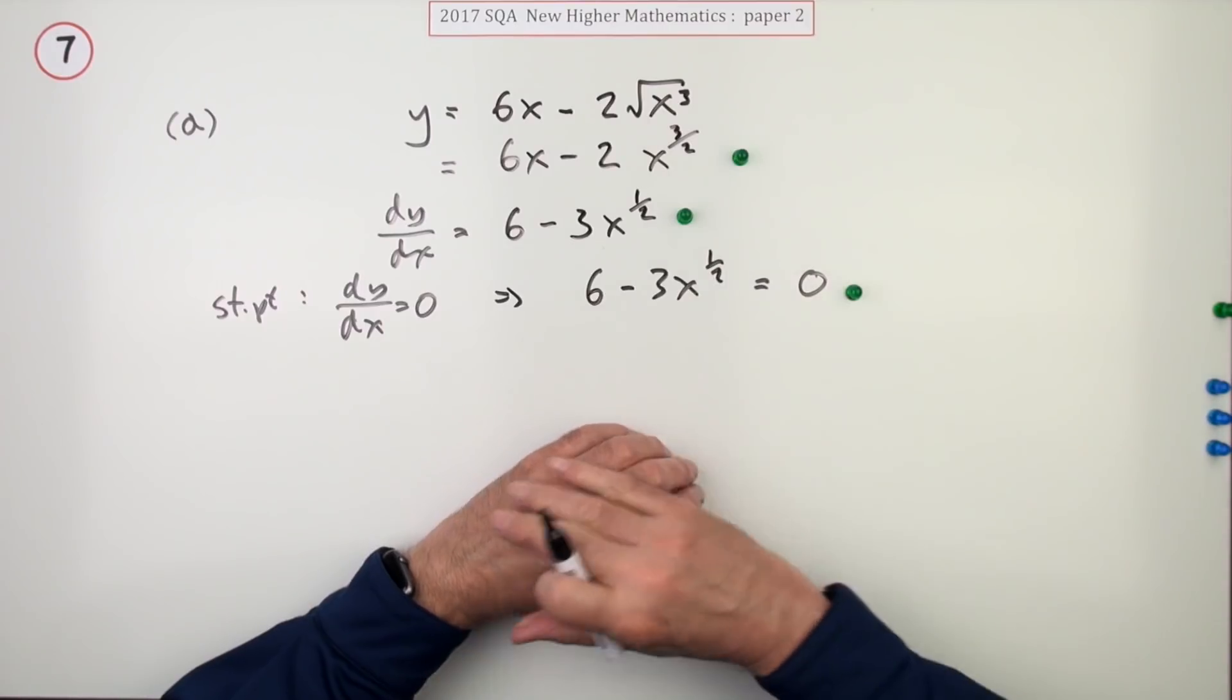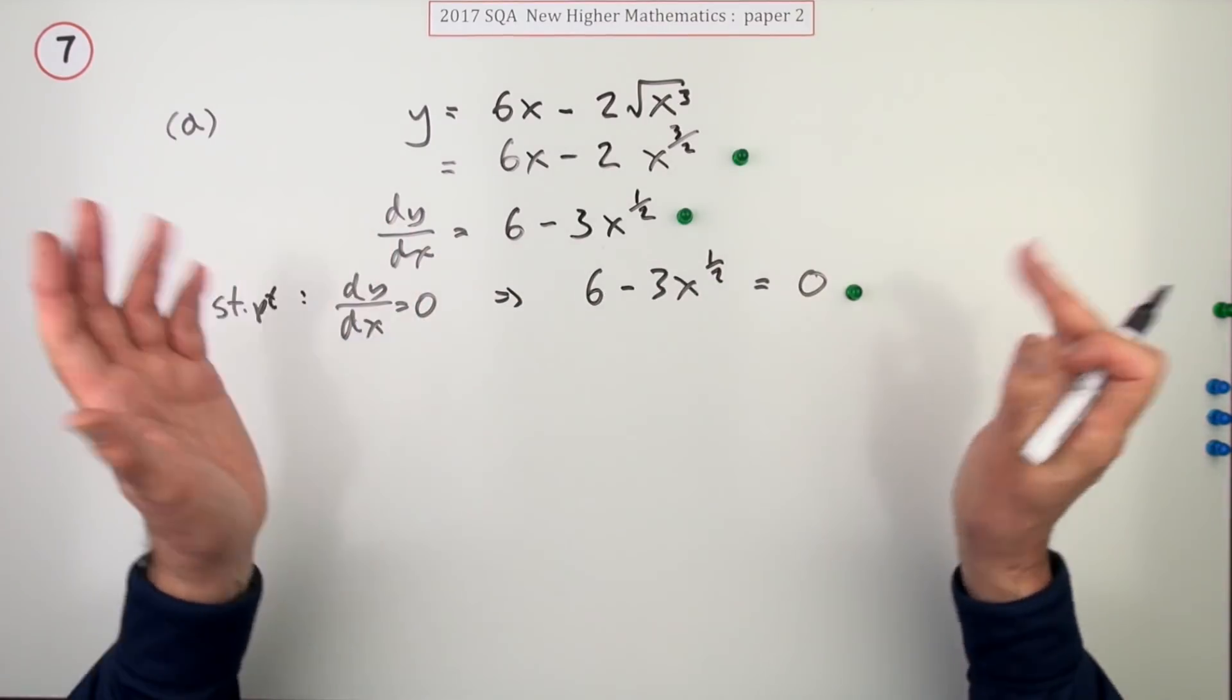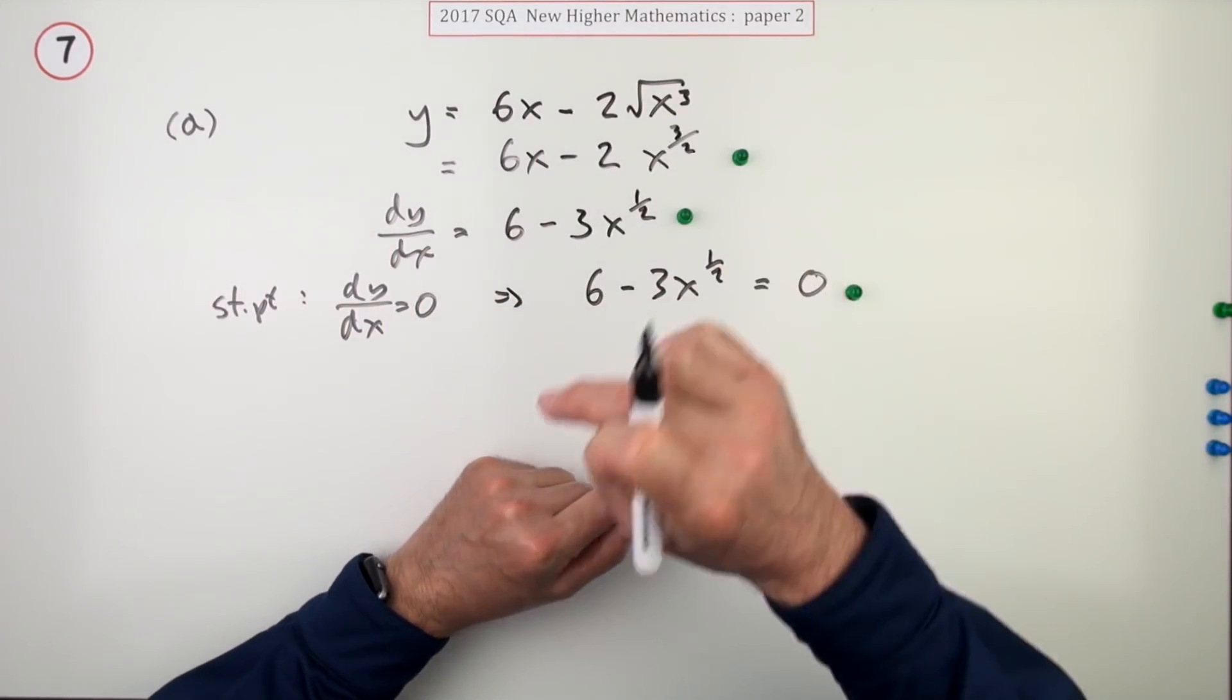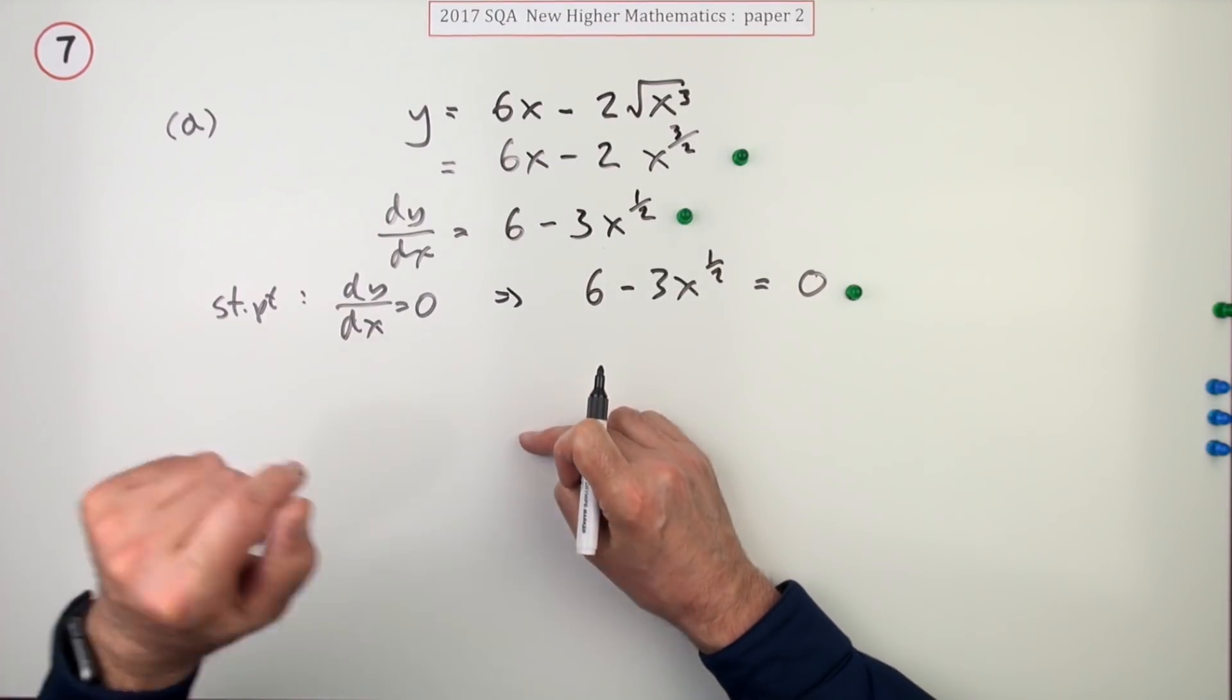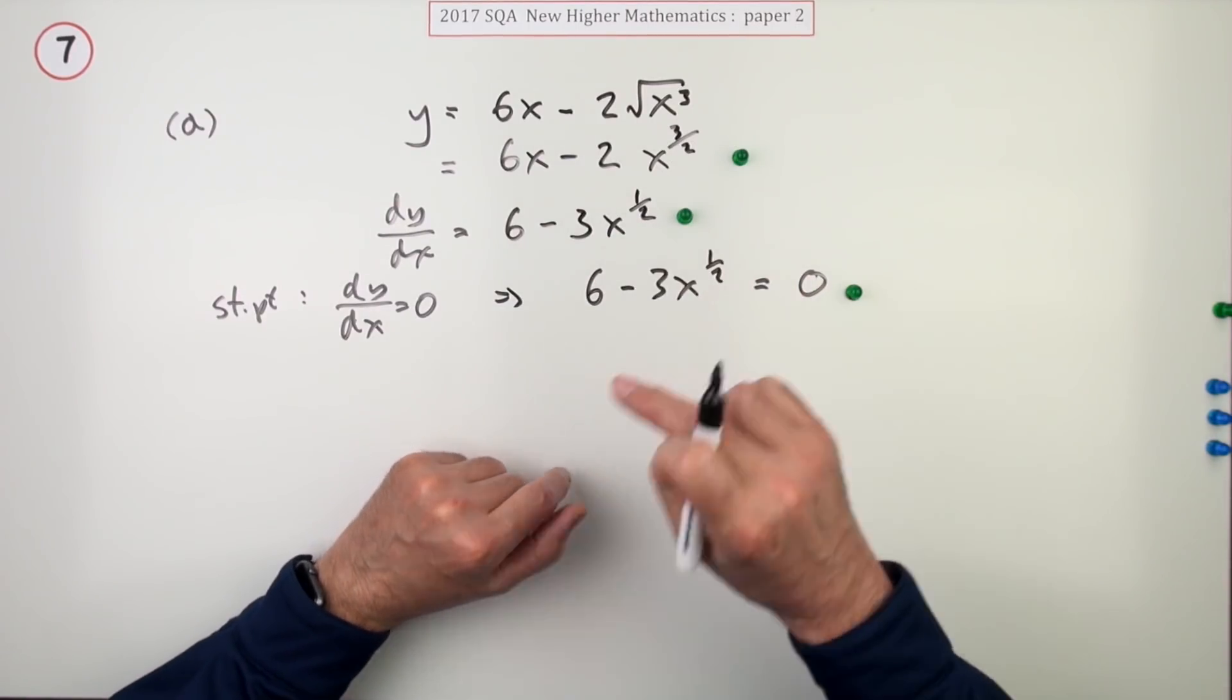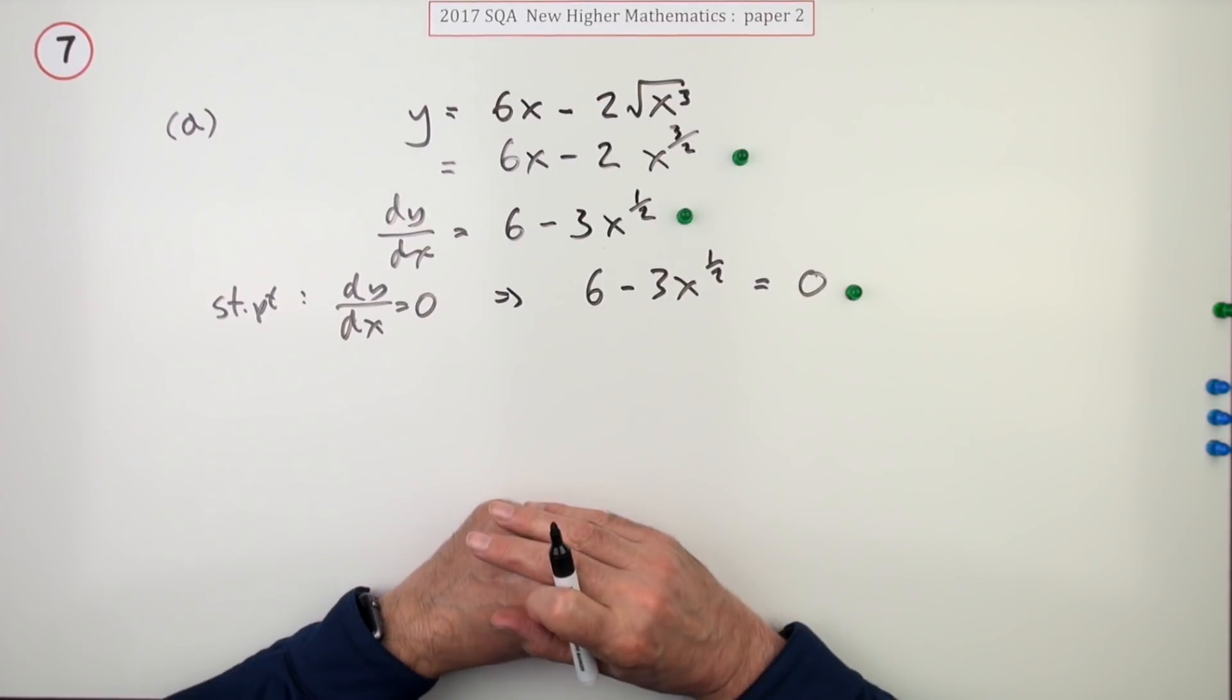Not sure what the reasoning is. I'm just going to separate them like that because that's the obvious steps, isn't it? Get it into a differentiable form, differentiate it, state that if it's a stationary point it must be equal to zero. Now it's just a case of solving that.